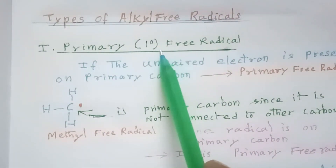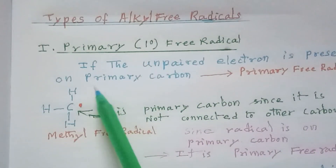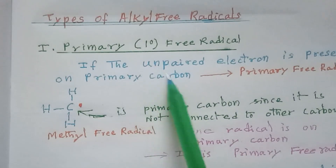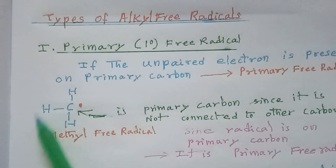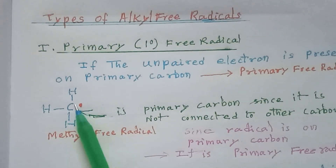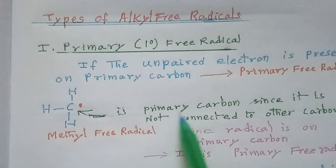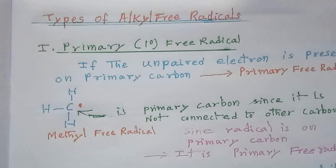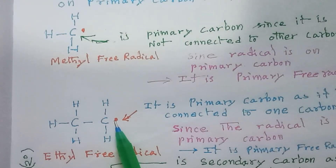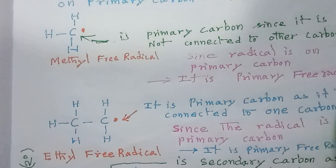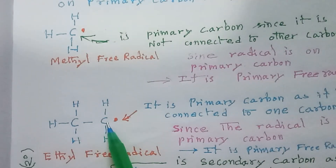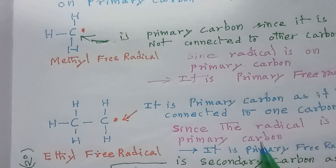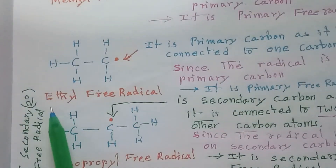The first type is the primary or first-degree free radical. If the unpaired electron is present on a primary carbon atom, it is called a primary free radical. For example, the methyl free radical — the free radical is present on a carbon that is not connected to any other carbon atoms, so it is a primary carbon, making it a primary free radical. Similarly, the C2H5 radical: the radical carbon is connected to only one other carbon, which defines a primary carbon, so it is also a primary free radical.